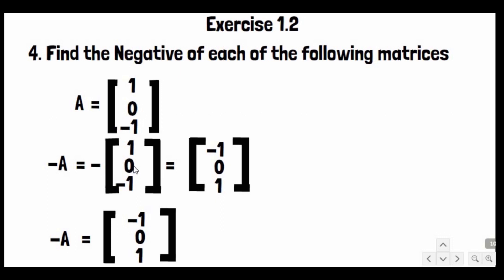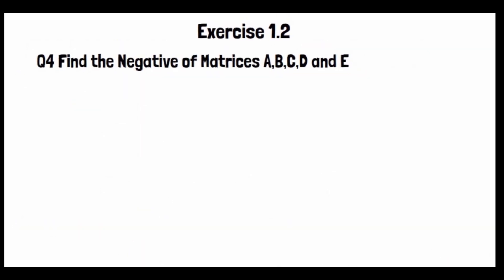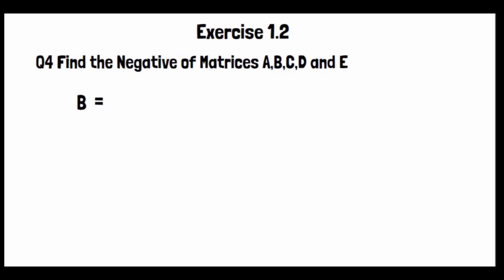So the negative matrix minus A is equal to [-1, 0, 1]. This is the negative of Matrix A for Question 4.